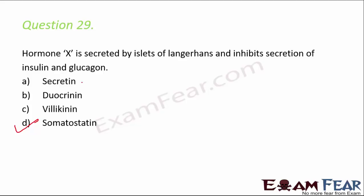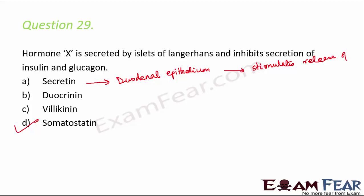Secretin is secreted by the duodenal epithelium and stimulates the release of digestive enzymes. Duocrinine is also released by the duodenal epithelium and stimulates the Brunner's glands to release mucus.